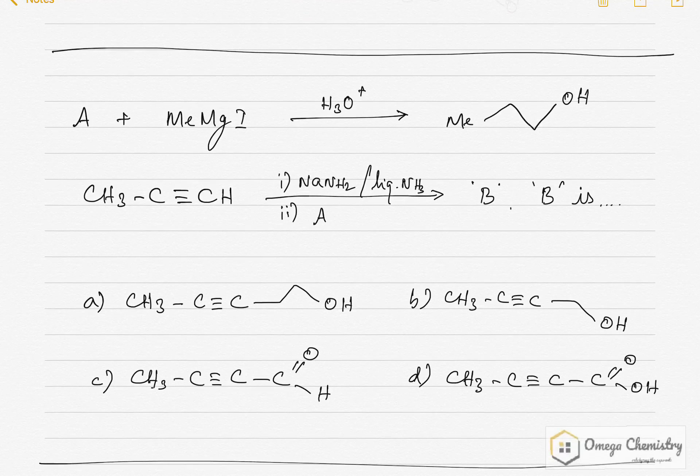We have a problem. Here, A reacts with methyl magnesium iodide to give me this compound. And when I take propyne, propyne reacts with sodamide and liquid ammonia followed by A treatment. I am going to add A to get the product B.